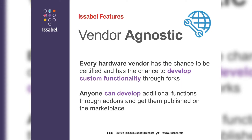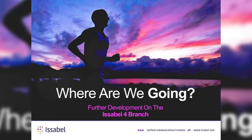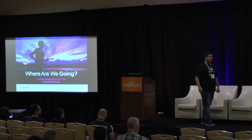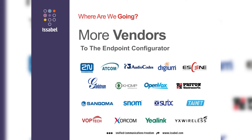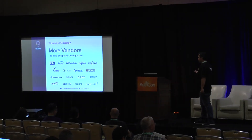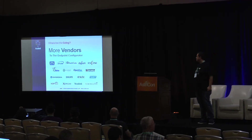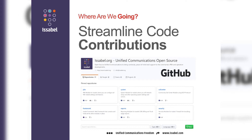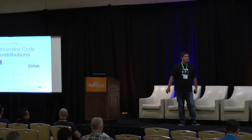Isabel is vendor agnostic — every hardware vendor can work with us, and anyone can develop functionality or add-ons to be published on the marketplace. Our plan is to give continuity to the project, develop more features, get more robust, improve security, and continue working on the Isabel 4 branch. We want to add more vendors to the supported hardware — we're pretty big on DAHDI and wanpipe, but every other vendor is welcome. We'd also like to get more contributions to the source code, as everything is published on GitHub.